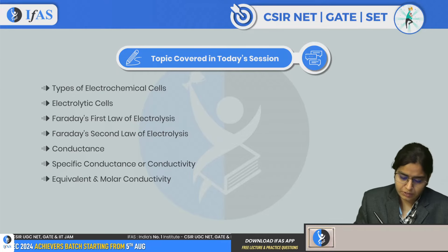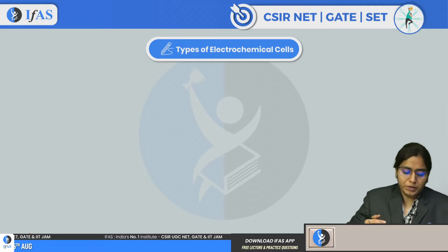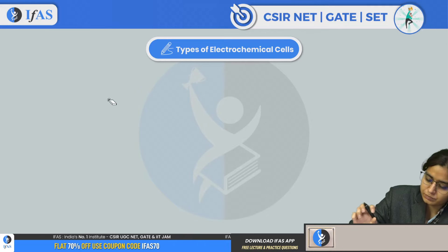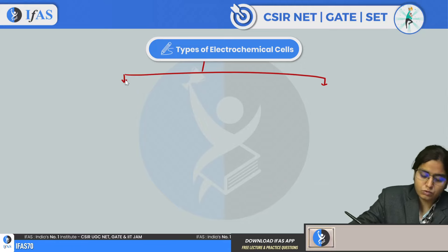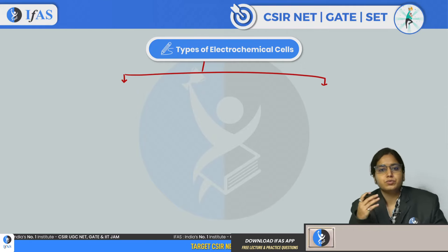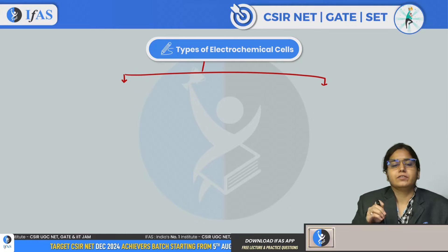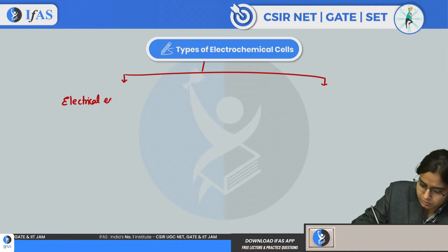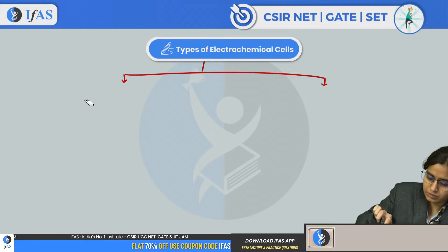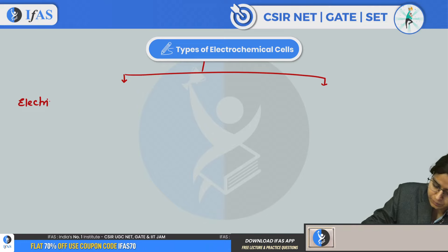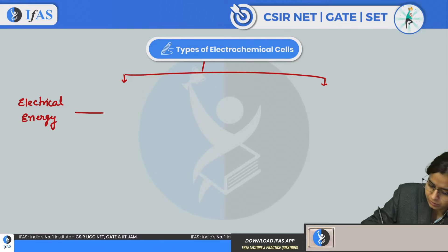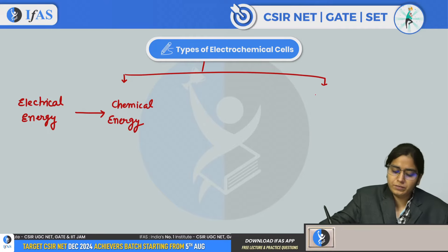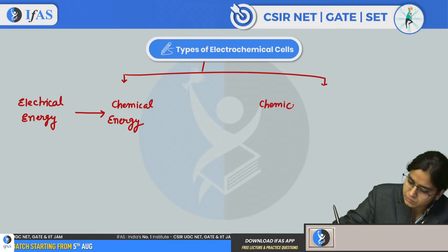Let's start with types of electrochemical cells. We can divide them into two categories. The first type converts electrical energy to chemical energy. The other type does the opposite — it converts chemical energy to electrical energy.